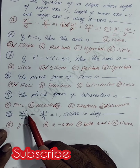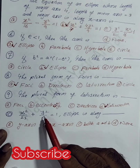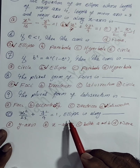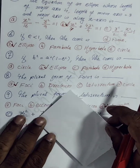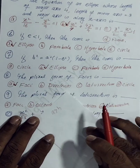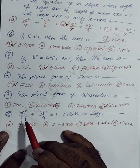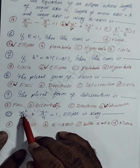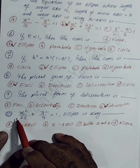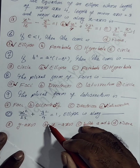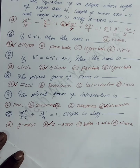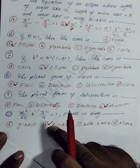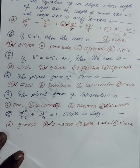The tenth MCQ: for the ellipse x²/25 + y²/9 = 1. Since A > B and the larger denominator 25 corresponds to x², the major axis is along the x-axis. So the axis of the ellipse is along the x-axis, and option B is correct.